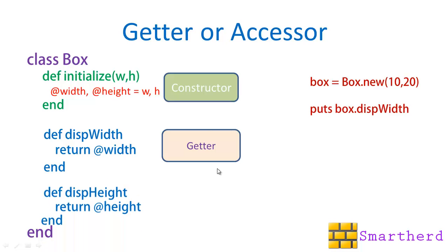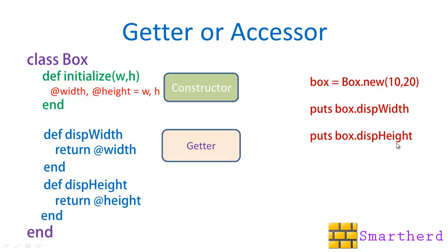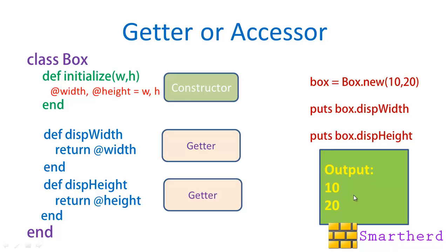So this is a getter. Similarly for the height, we are having a method def display_height and return @height. This function returns the value of @height, the instance variable height. box.display_height calls this method and the return value comes through — puts @height. Hope you are getting it. So this is also a getter. The output will be 10 and 20 — @width is 10 and @height is 20.